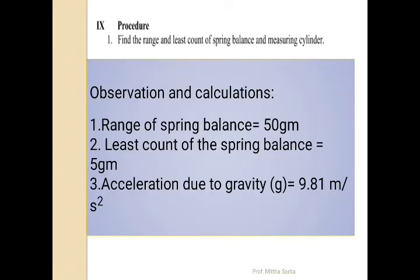Procedure 1: Find the range and least count of the spring balance and measuring cylinder. The range of spring balance used during this practical is 50 gram. Least count of the spring balance is 5 gram. Acceleration due to gravity G is equal to 9.81 meter per second square.